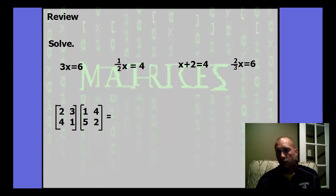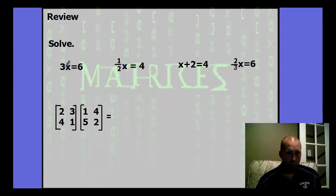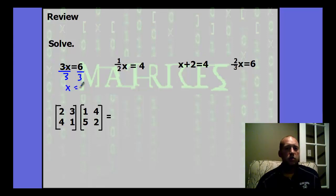Let's first review some basic solving. So if we solve this for x, we know that the answer is 2. Right now we're multiplying by 3, so we need to do the inverse operation — the opposite operation — just divide by 3. So then we get 2. Here we're multiplying by one-half, so we do the inverse: multiply by 2 over 1.